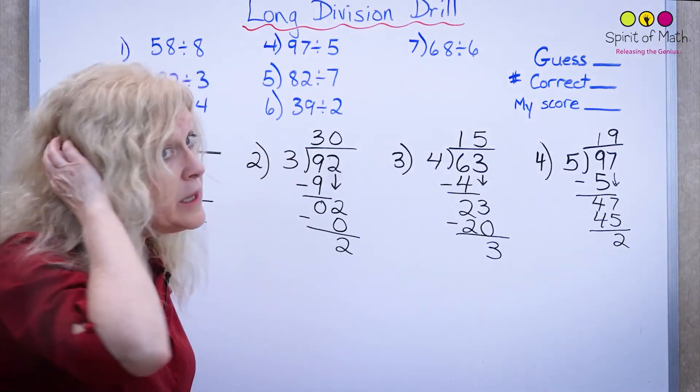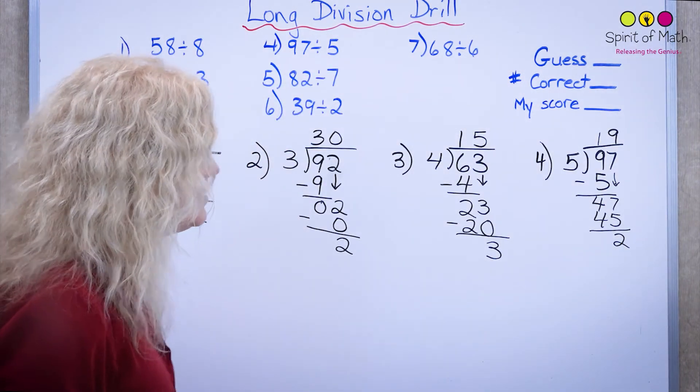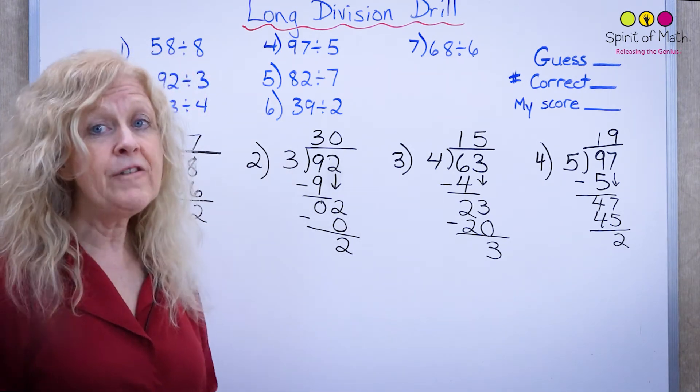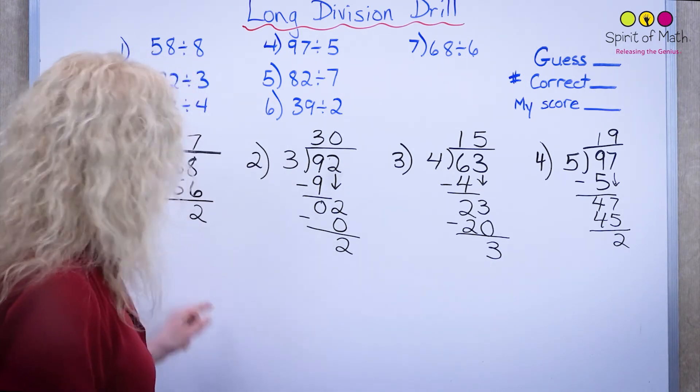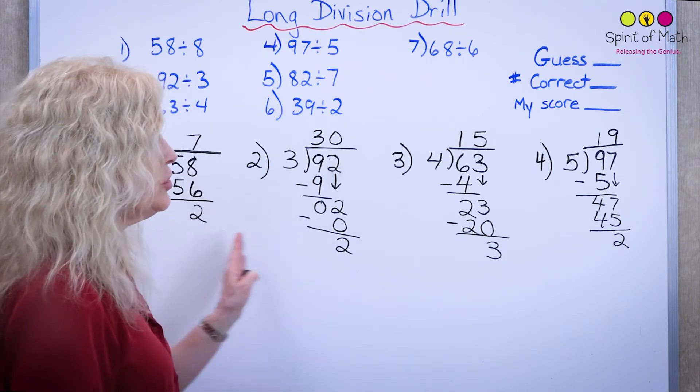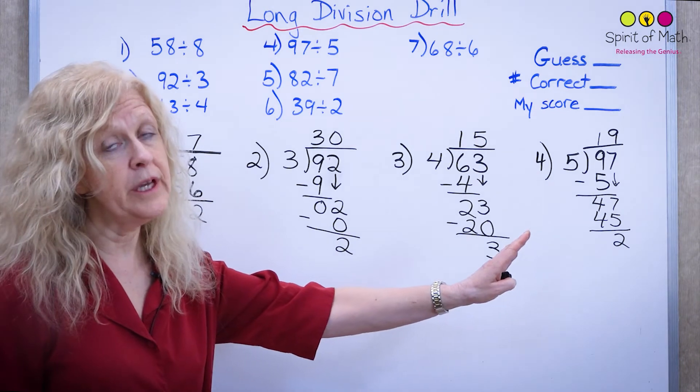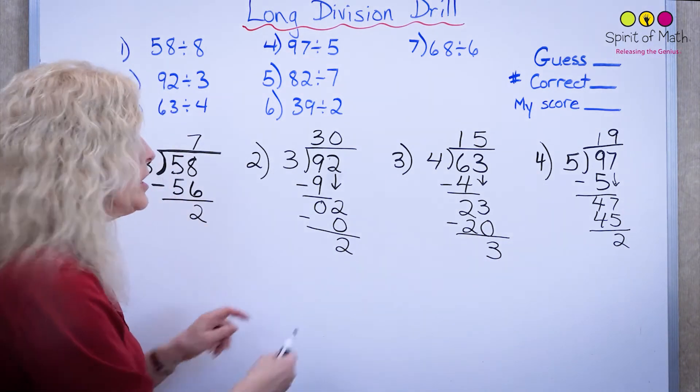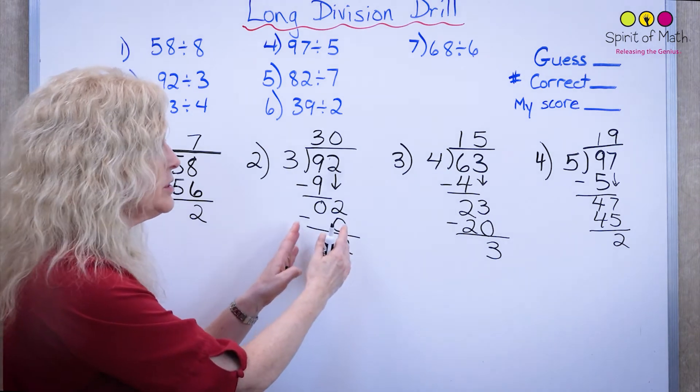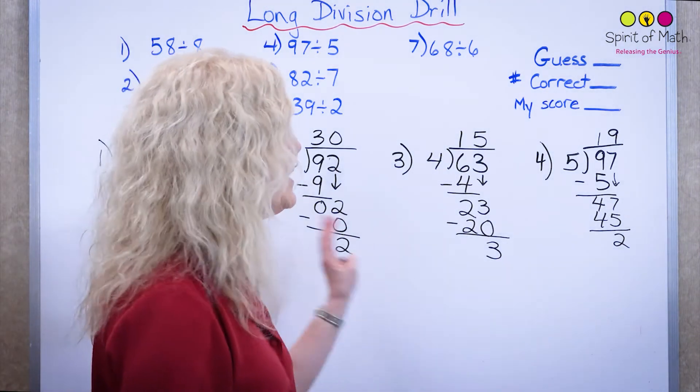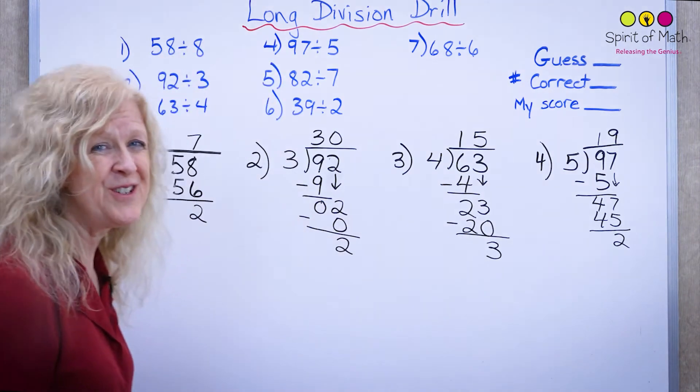Now, when you're doing that, that's just the long division itself. That's what it looks like. After you do each question, you should also be doing your x check. I wanted to make sure you knew how to do that properly. But when you're doing your quiz, you should do one question, then do the x check. Do the next question, then do the x check. And so on.